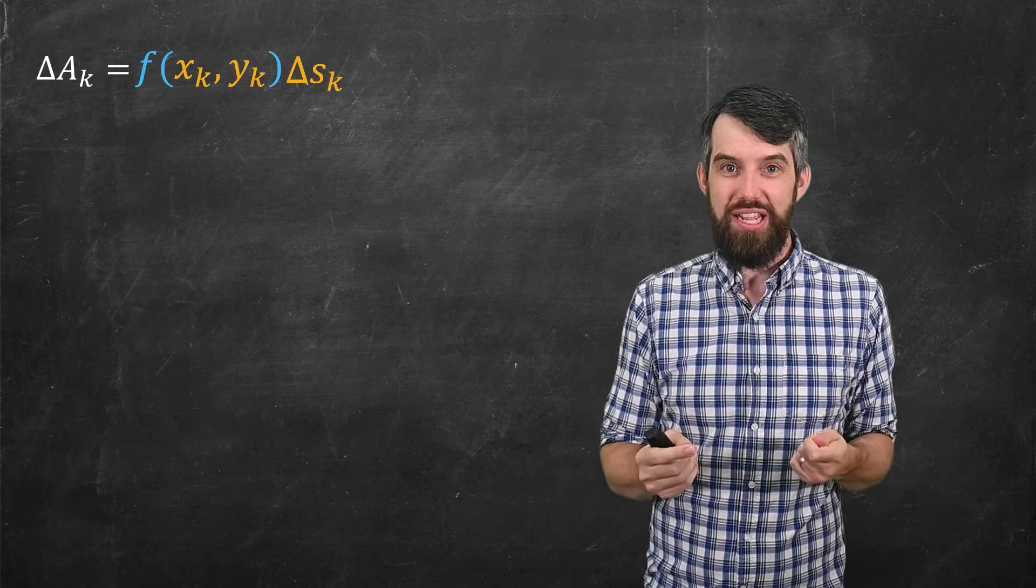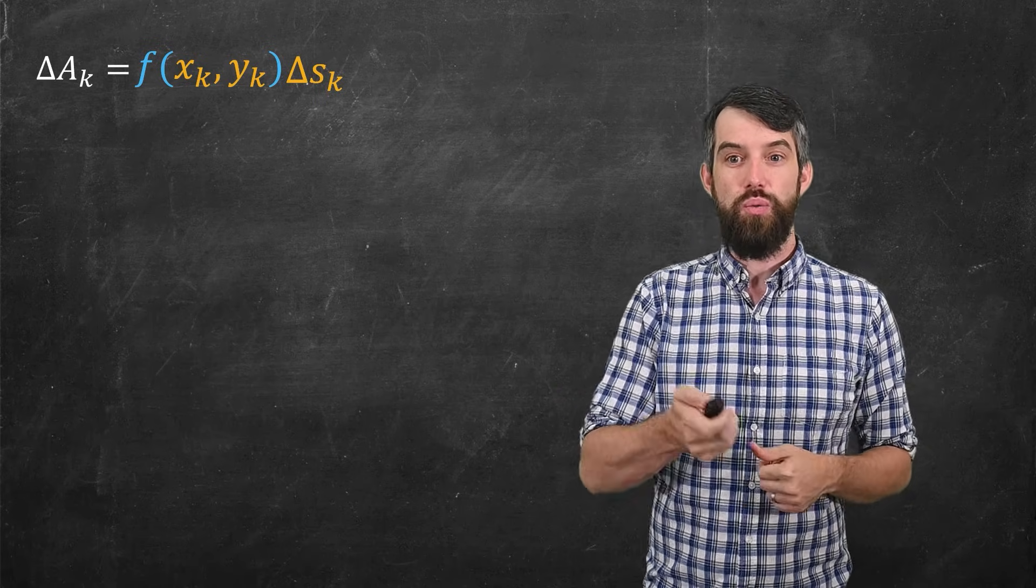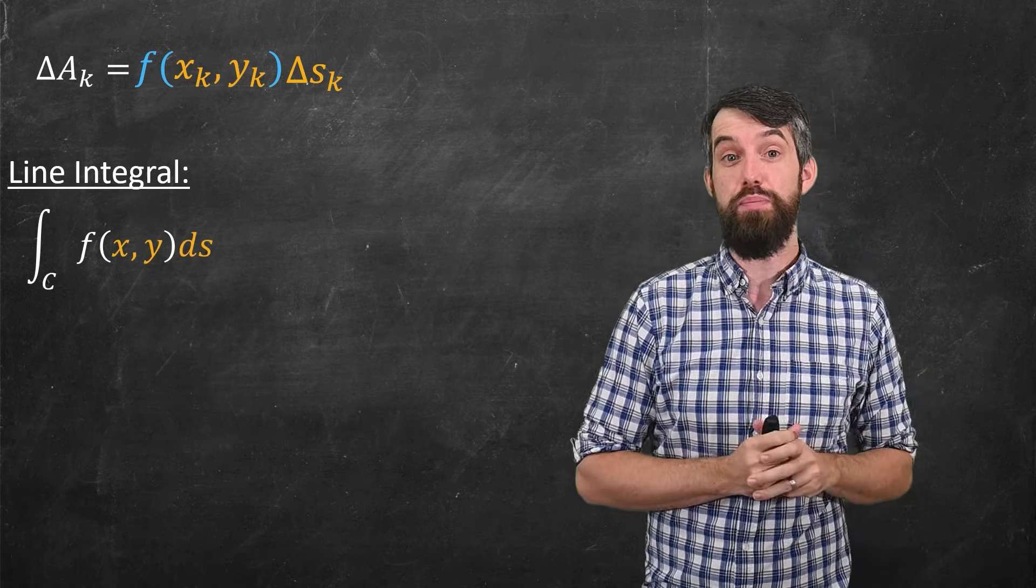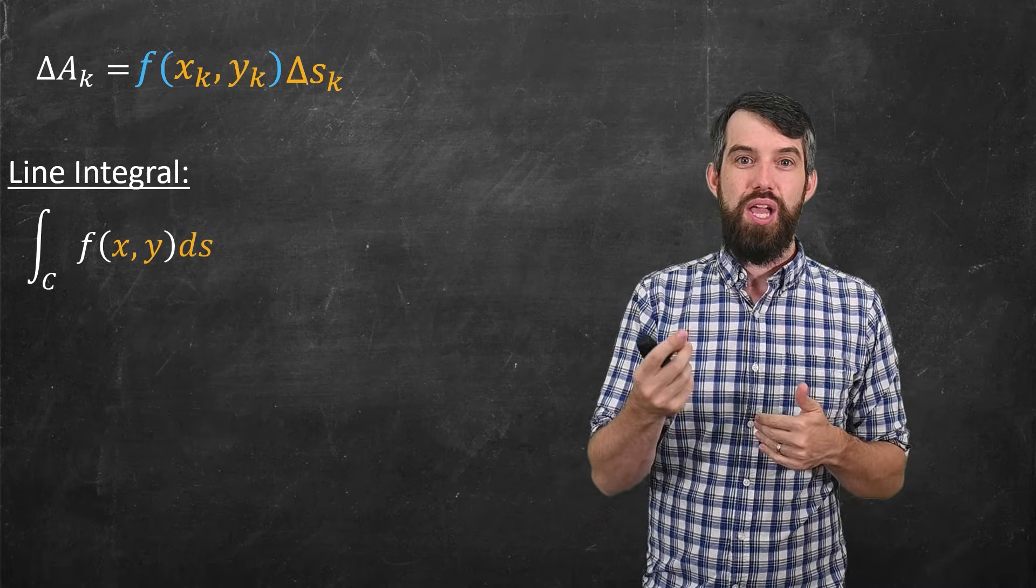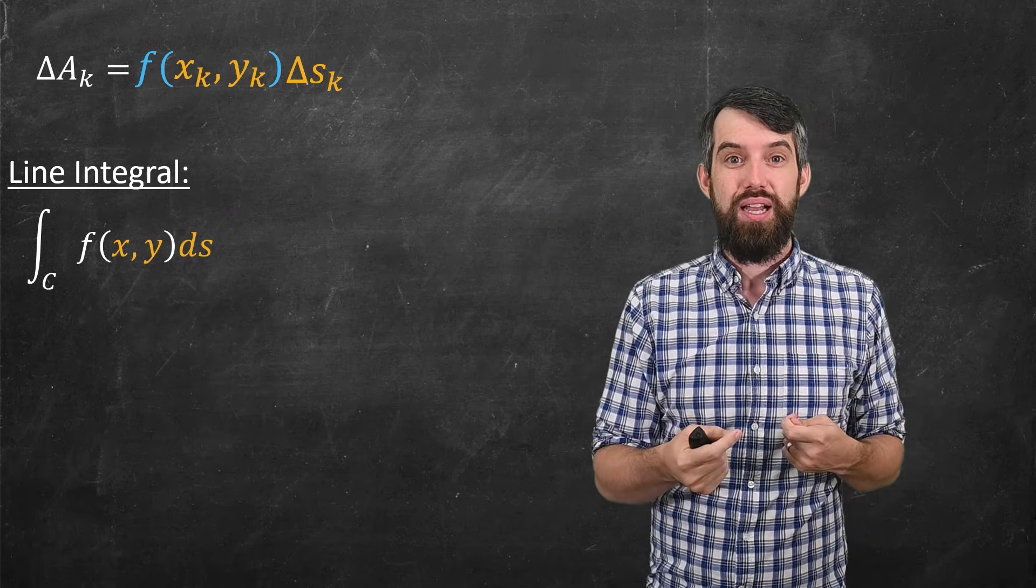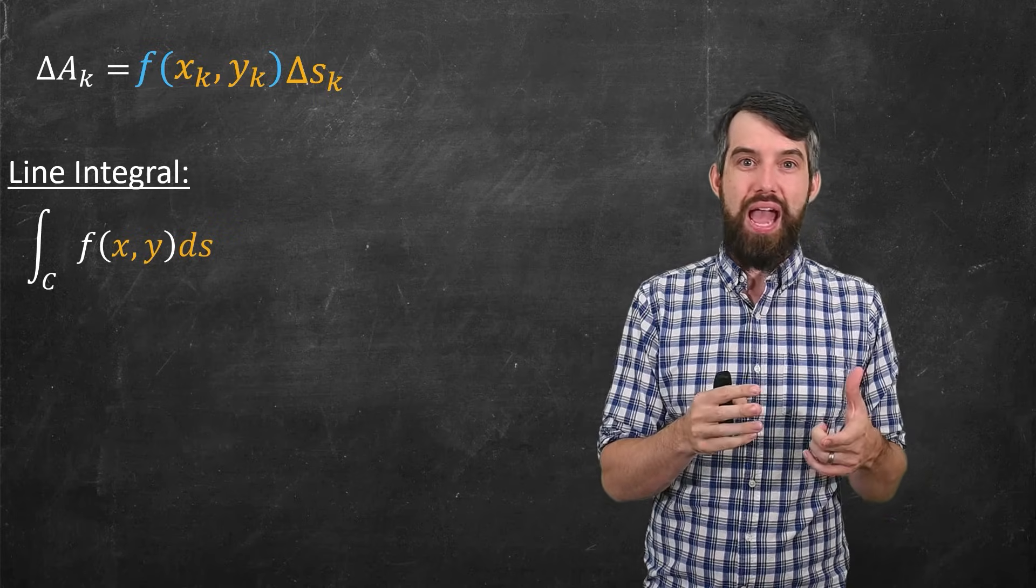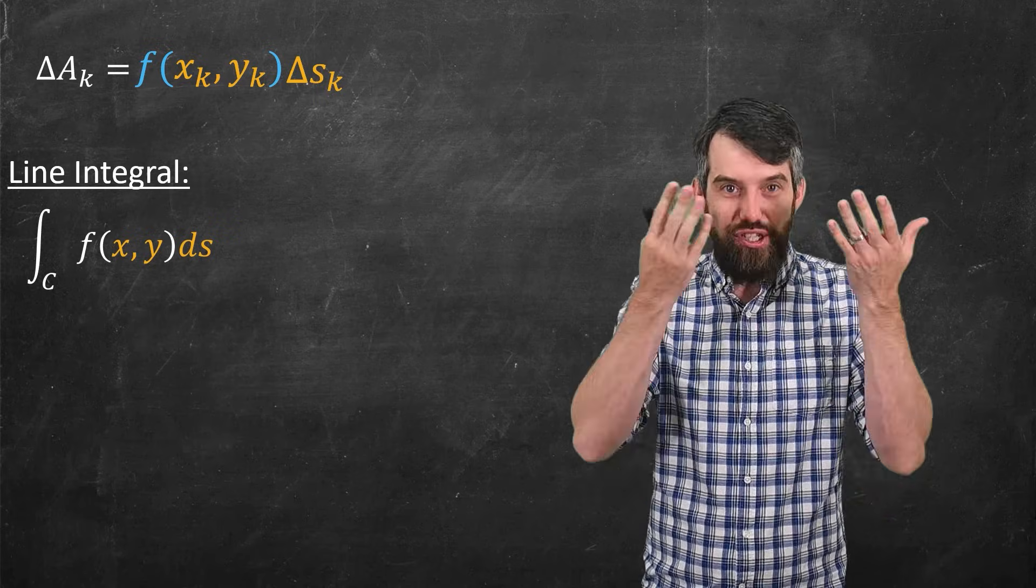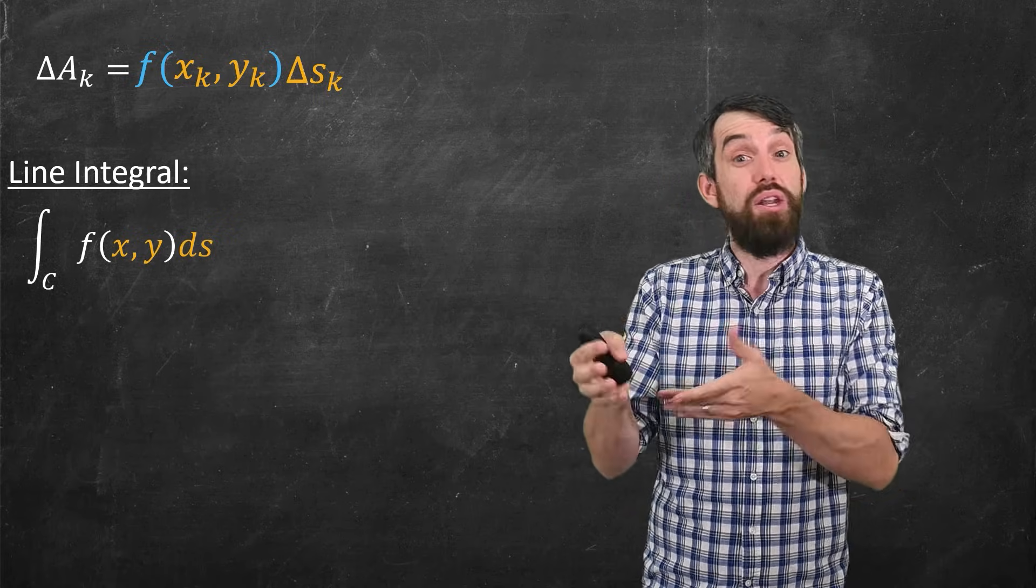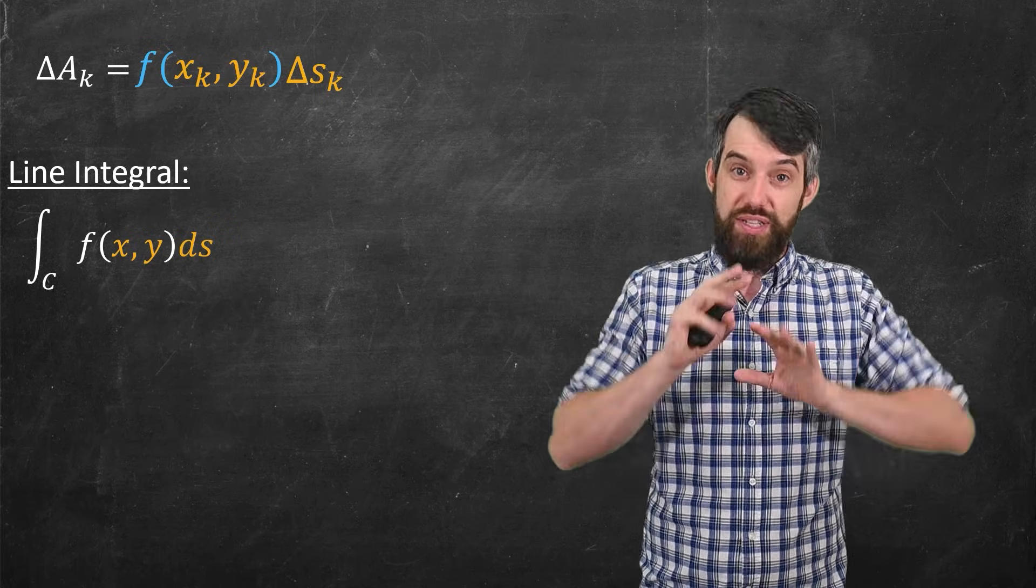So now we're ready to finally define what we mean by a line integral. So here it is, it's some fancy set of symbols, and notice this is a new symbol that we have not seen before. This is not an integral from A up to B. It's an integral with a subscript of C. And that just means a line integral over a curve. That's how I interpret this. And then for the integrand, I put my f(x,y) analogous to my normal heights that I put in my integrand, and then I wrote ds for my little infinitesimal increase in the arc length s.